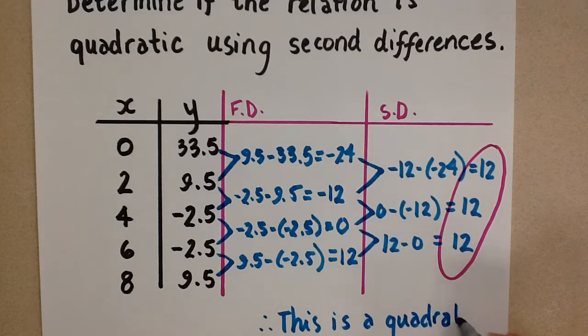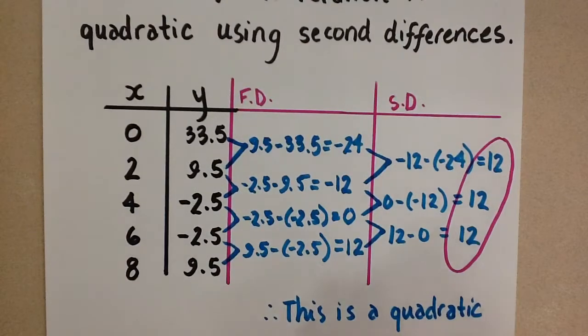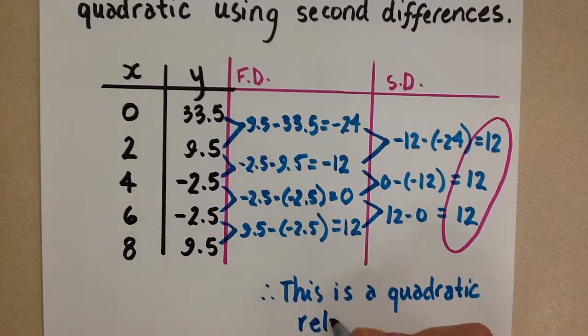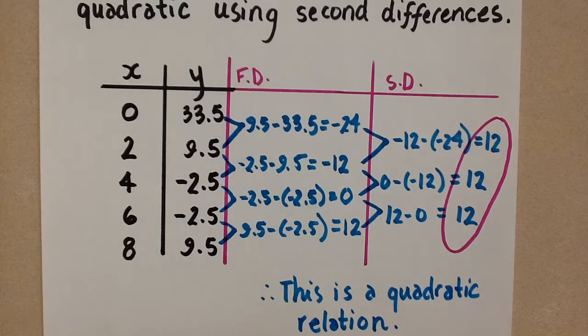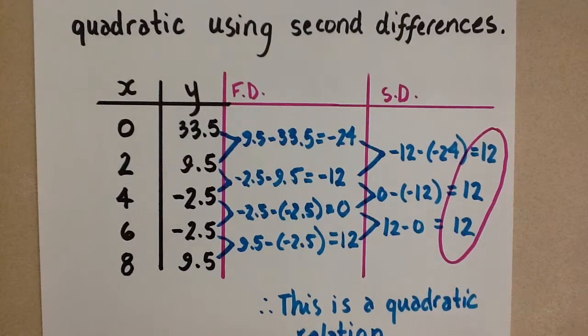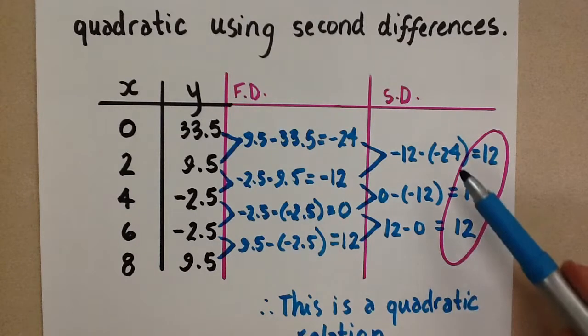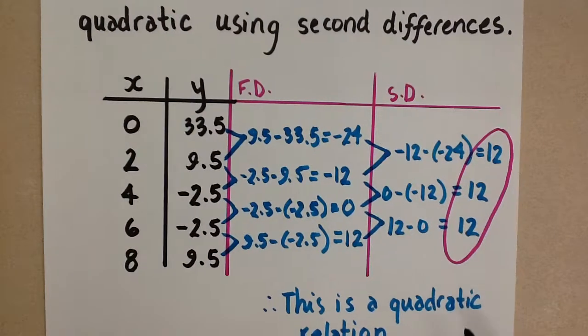If at this point, those second differences were not equal either, then we would stop. We can go on to third differences. But in terms of finding out if this is a quadratic or not, the second differences are enough to determine that. So we have to find our first differences first, and then second differences, and compare those values to determine if a relation is quadratic when given a table of values.